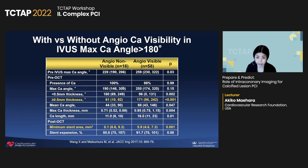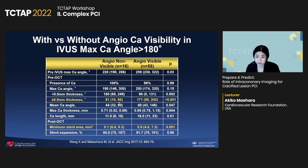If we compare angio-visible versus non-visible calcium in the region having the IVUS maximum calcium angle of 180 degrees, the thickness of the calcium greater than 0.5 mm is very little. So if you don't see calcium by angio, they are not thick calcium — meaning you can expect good stent expansion. Starting with angio is important.